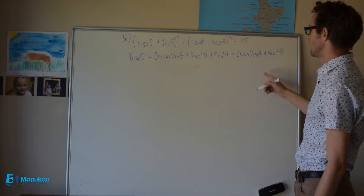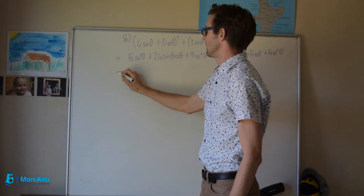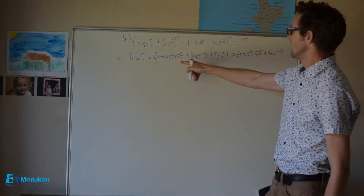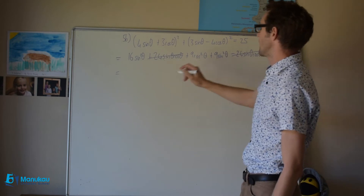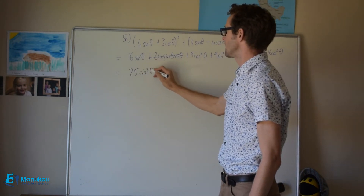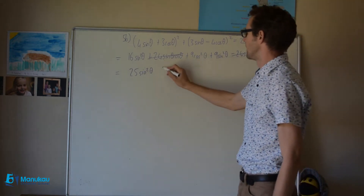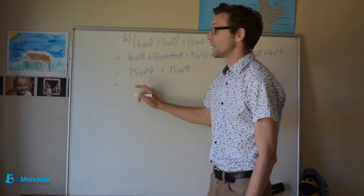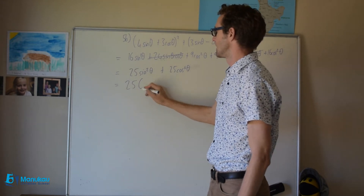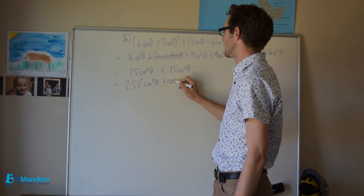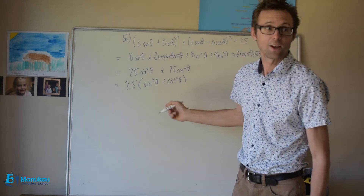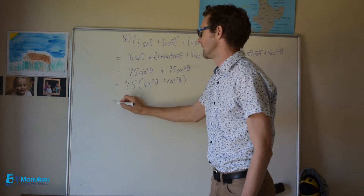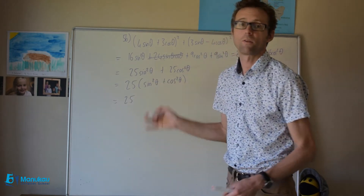On our next line, the 24 sine theta cosine theta terms cancel each other out. In total, we have 16 plus 9, so 25 sine squared theta, and the same number of cosine squared thetas. Now we're going to factorize — pull the 25 out — and we have in the bracket sine squared theta plus cosine squared theta. You know what this is: sine squared theta plus cosine squared theta equals one, so it's 25 times one. Our answer is 25. We've proved what we needed to prove.